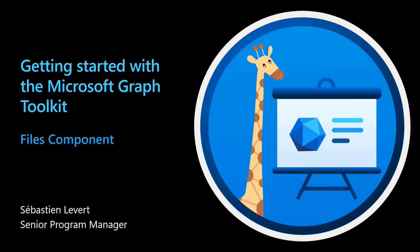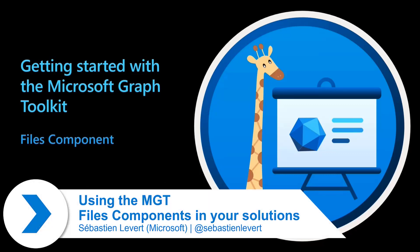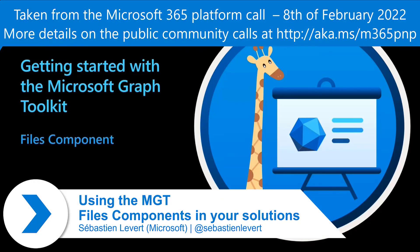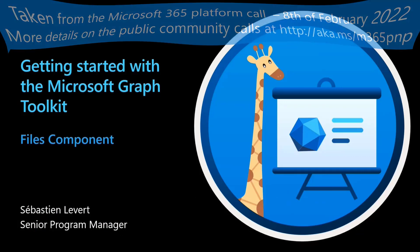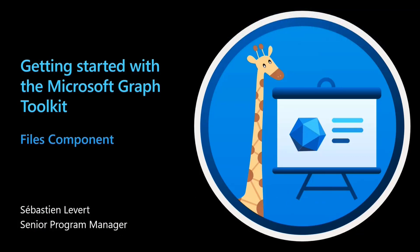Today I want to talk about our Graph Toolkit. We've covered a lot of our components already — the person components, people, tasks, agenda, to-do. Today I want to focus on something that is really near and dear to my heart, which is files. Coming from a strong SharePoint background, I've been working with files, SharePoint, OneDrive, and Teams forever. I'm excited today to showcase how we're thinking these should be handled within the Microsoft Graph Toolkit.